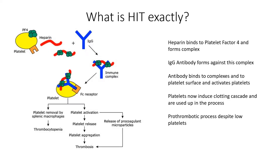So what exactly is heparin-induced thrombocytopenia? Patients are injected with heparin and this binds to a molecule produced by platelets called platelet factor 4. This complex of heparin and platelet factor 4 can cause an immune reaction in the body, much like a bacteria or a virus might. The body in reaction produces an IgG antibody, which will then bind to this immune complex — as we can see on the diagram — and this complex will bind to platelets via the FC receptors on their surface.